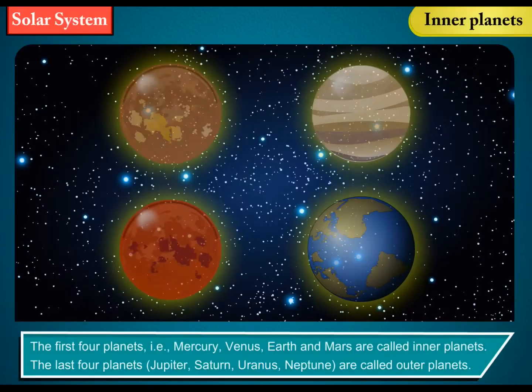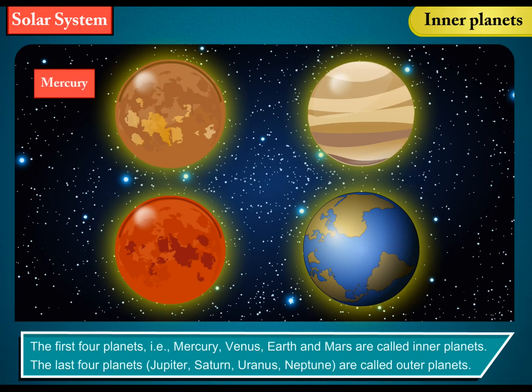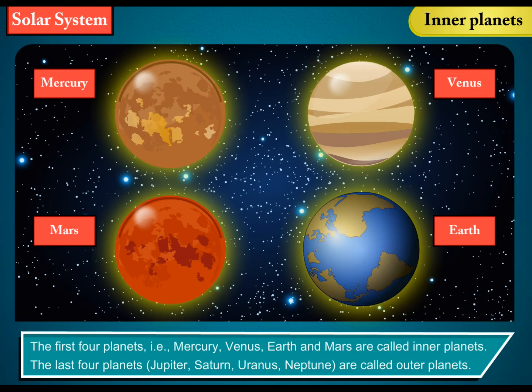The first four planets—Mercury, Venus, Earth, and Mars—are called inner planets.